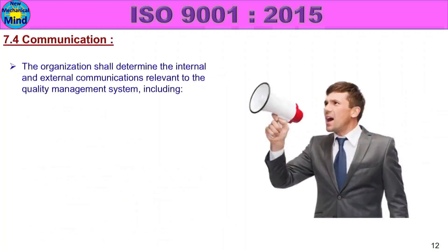7.4 Communication. The organization shall determine the internal and external communications relevant to the quality management system.